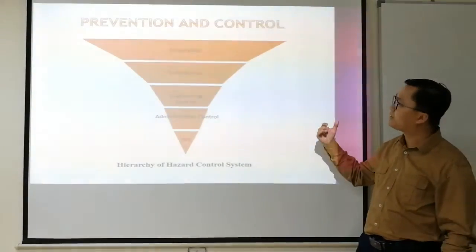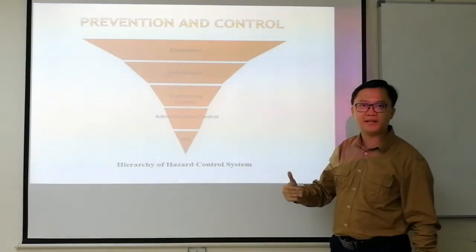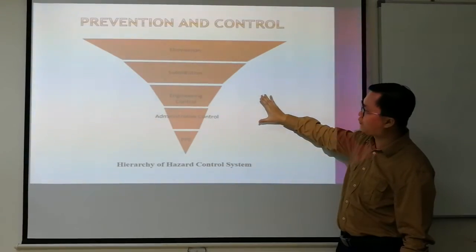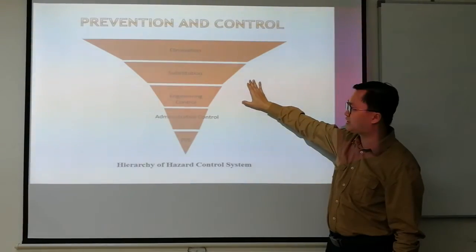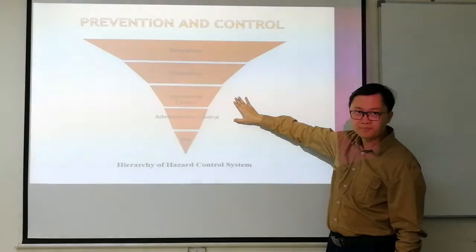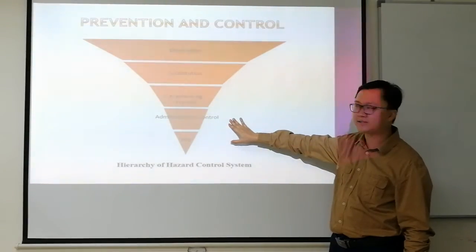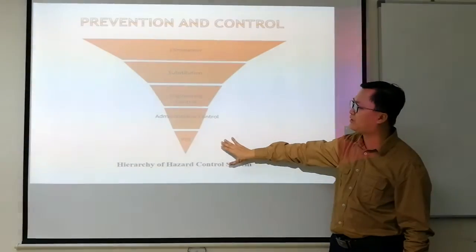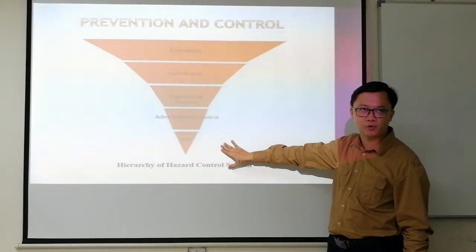Knowing the sources as well as the category of hazard, we now need to prevent and control them from impacting employees. There are five categories: the topmost is elimination of the source of hazard, followed by substitution if elimination is not possible, then engineering control, administrative control through awareness, and if the above prevention controls are not possible, employees are advised to use personal protective equipment, PPE.